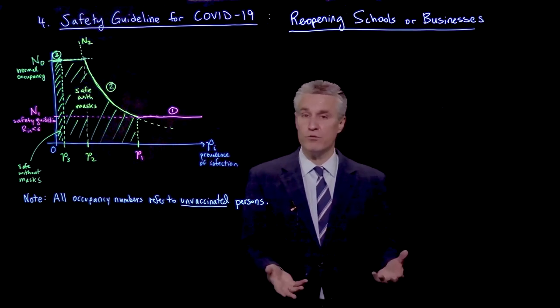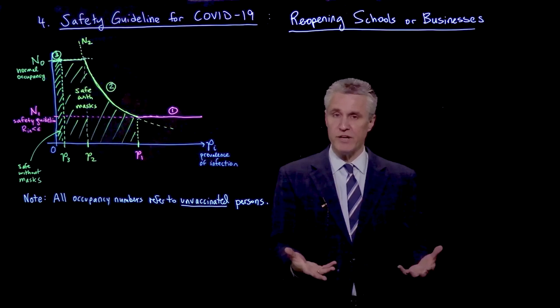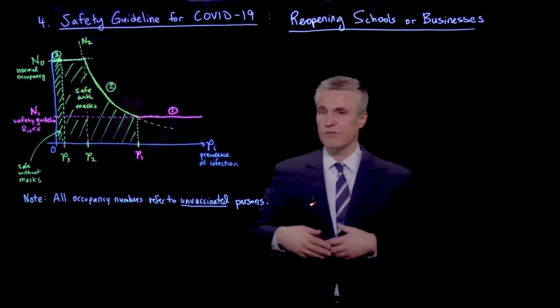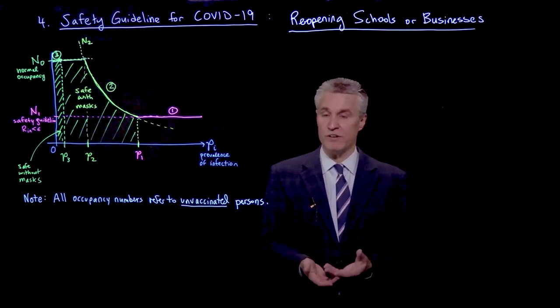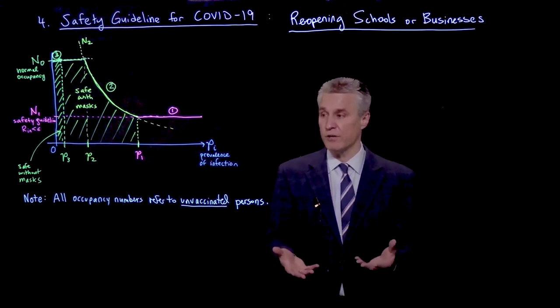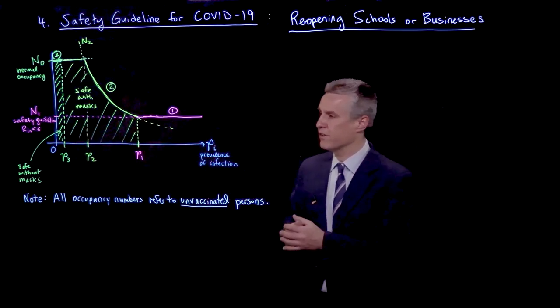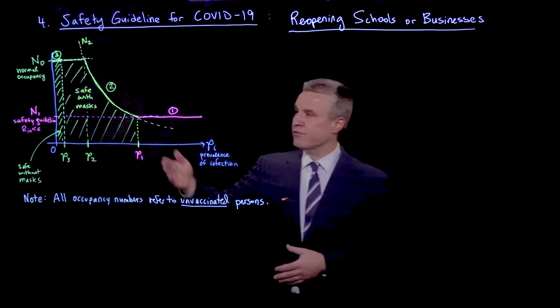For example, let's think of a school or a business where we typically have a lot of the same people there every day, but some others are coming and going, or maybe going home and getting infected and coming in. So the rate of infection is low. So we expect, typically, the number of infected people is 0 or occasionally 1. And as the prevalence goes down, then we start to see that the situation is getting safer and safer.